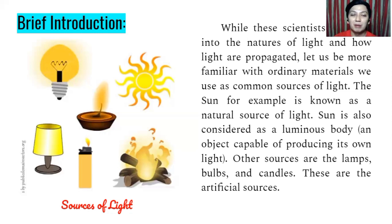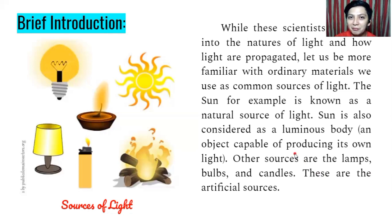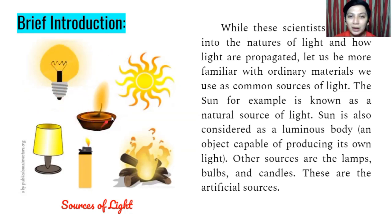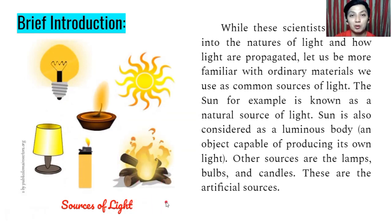Natural sources exist in the environment naturally. Another example aside from the sun — can you give me some? We have fireflies — fireflies are a natural source of light. And also the moon, which reflects sunlight. We also have the bulb, a wick in oil, the lamp, a lighter, and a bonfire. Those are the different examples of natural and artificial sources of light.